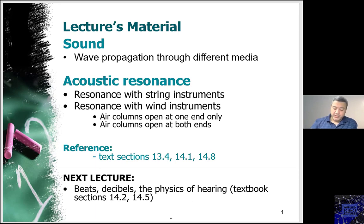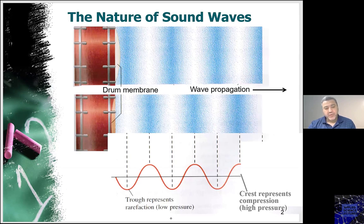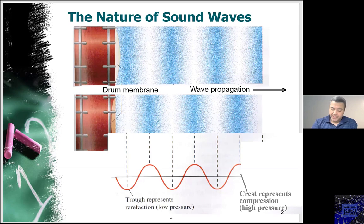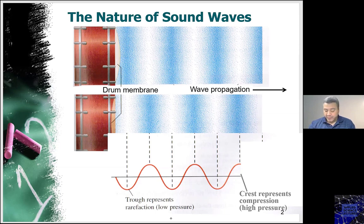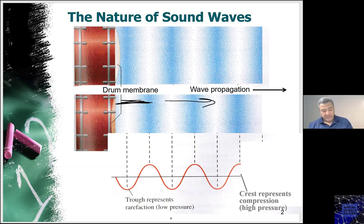We have seen earlier that waves are of two types: longitudinal and transverse waves. The longitudinal type is the sound waves, where the vibration is happening along the propagation direction. We have this drum membrane that is vibrating and resonating, and this resonance is being transferred into the air, causing compression and rarefactions in that air. This vibration propagates along the direction of propagation.